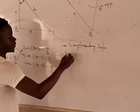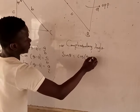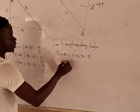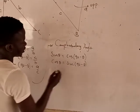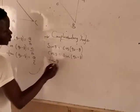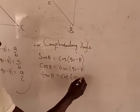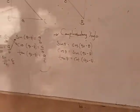We can see that sine theta equals cosine of 90 minus theta, while cosine theta equals sine of 90 minus theta, and tangent theta equals cotangent of 90 minus theta. So we have this for complementary angles.